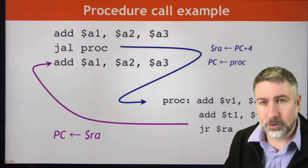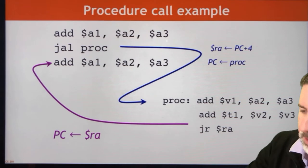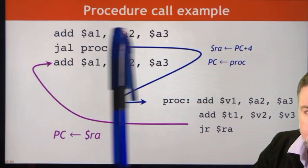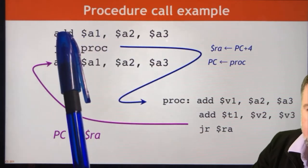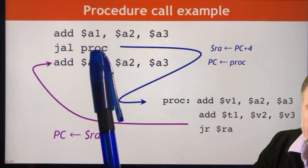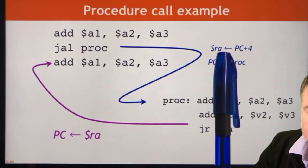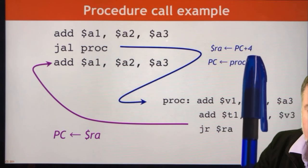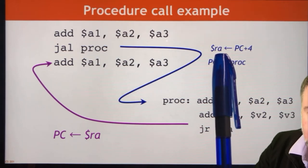This is what it looks like in code. You have your regular code, proceeding through doing whatever you're doing. Maybe you'll set up some arguments. Then jump and link to the procedure will put a new value in the program counter. It does two things: it puts a new value in the program counter and it also puts the return address into the return address register.